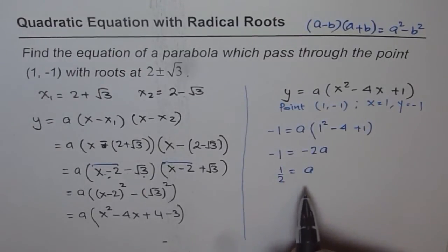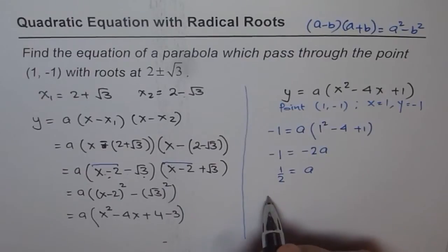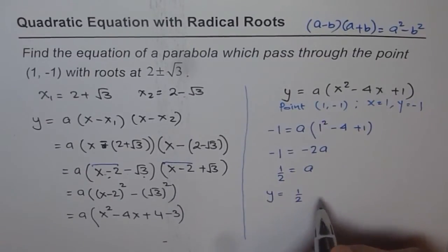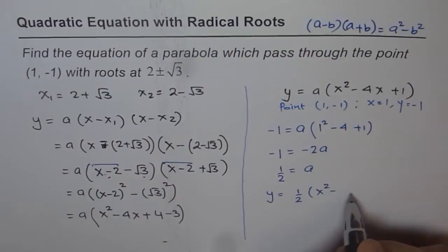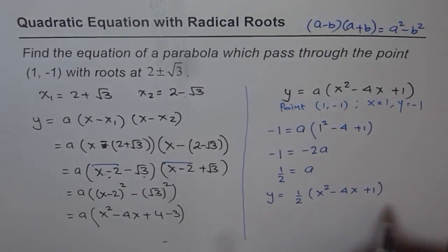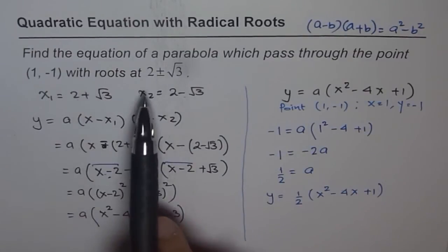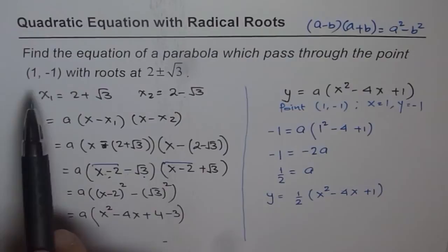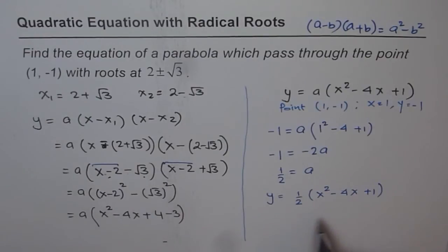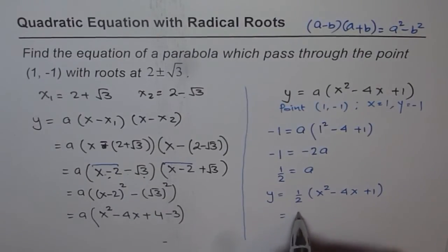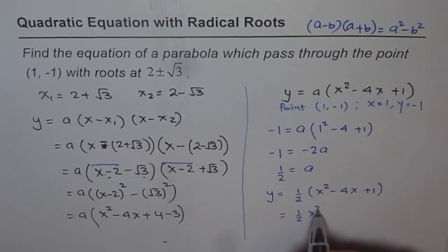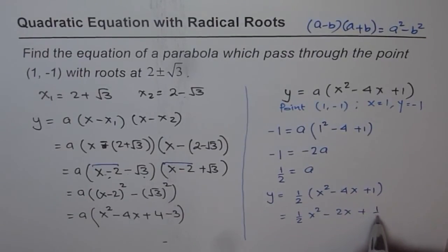Once we have a equals one half, we can write the equation: y equals one half times (x squared minus 4x plus 1). That is the equation we were looking for. You could also expand this and write it as one half x squared minus 2x plus one half. That is the answer for the given problem.